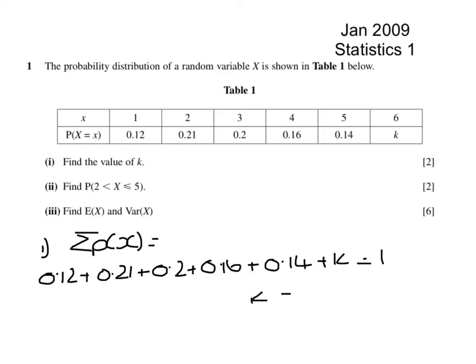So k will be 1 subtract 0.83, so it's 0.17.